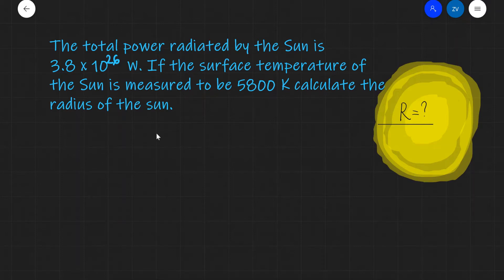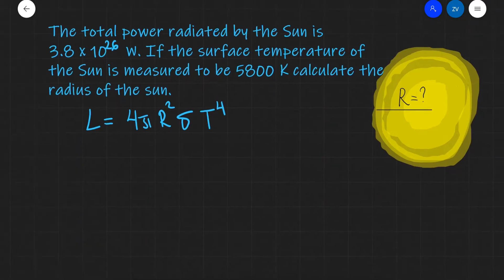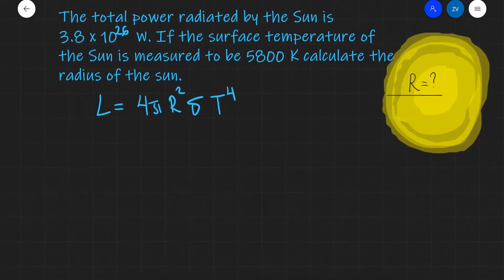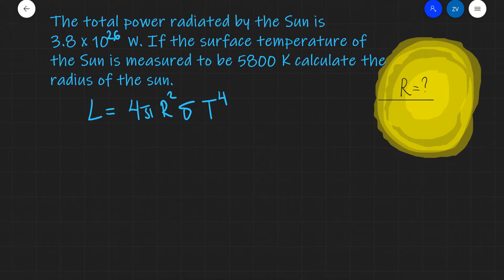So, what I'm going to do is just write down Stefan's law, which is that L, the luminosity or total power radiated outwards by the sun, is equal to 4πR² times this constant multiplied by the temperature to the power of 4. Now, what I'm going to do after this is simply rearrange for the radius.